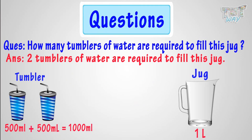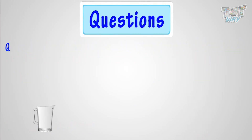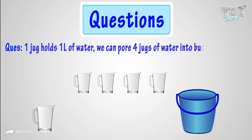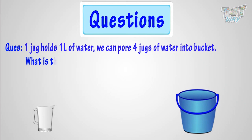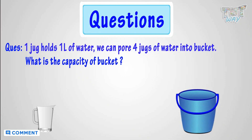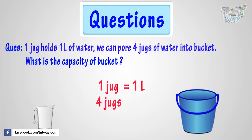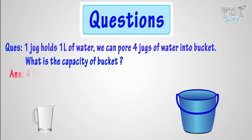Now, let's move on to the next question. One jug holds 1 liter of water. We can pour 4 jugs of water in a bucket. Then, what is the capacity of the bucket? Let's solve this question. Capacity of the jug is 1 liter, and we can pour 4 jugs of water in the bucket. 4 jugs means 4 liters of water. So, capacity of the bucket is 4 liters.